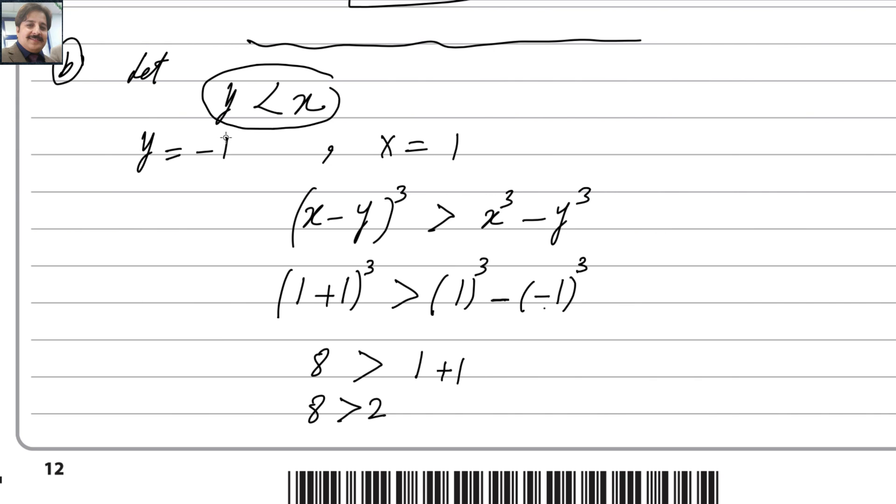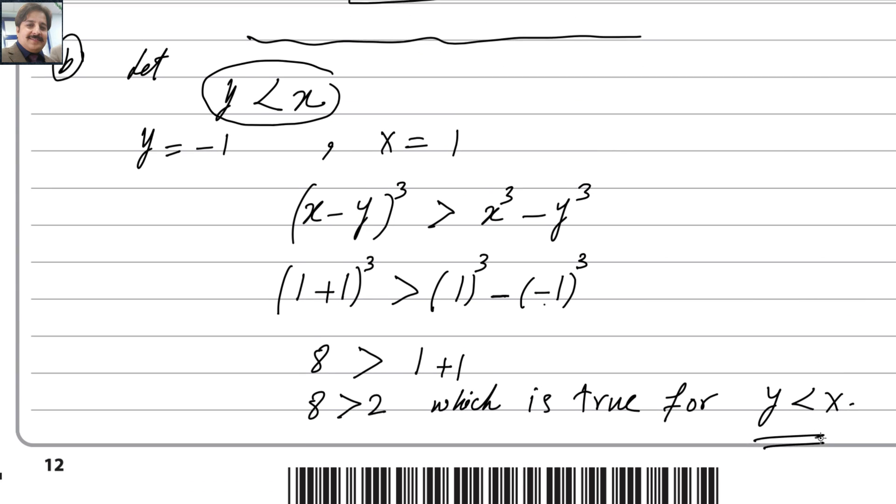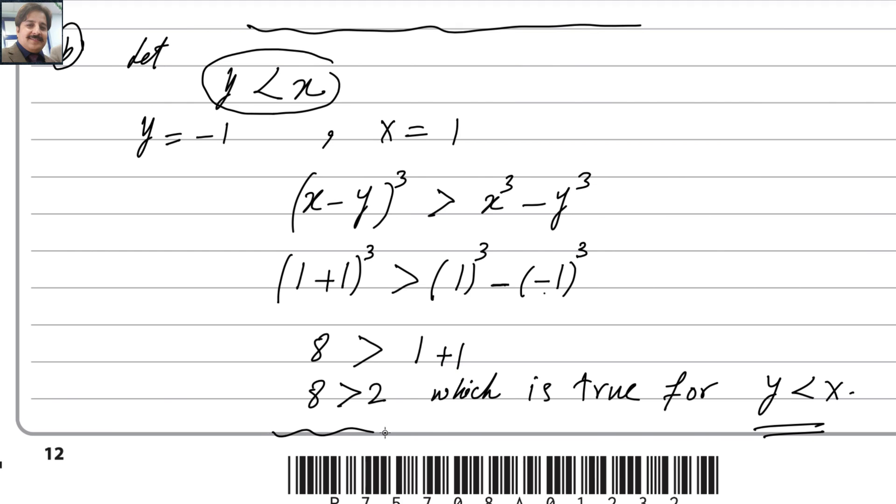For sure, everybody knows that 8 greater than 2 is true. But we are using a counter example where we are not using y greater than x; we are using y less than x, and we get a true result. So we prove the result for y less than x. The second part is done. If you have any questions or doubts, please write in the comment box. Thank you.